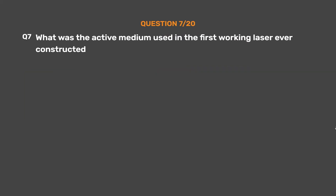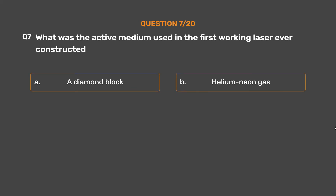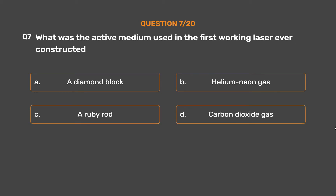Question number 7. What was the active medium used in the first working laser ever constructed? Option A: A diamond block. Option B: Helium Neon Gas. Option C: A ruby rod. Option D: Carbon dioxide gas.